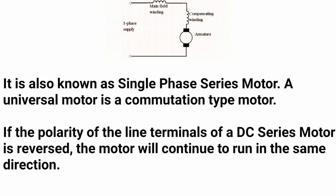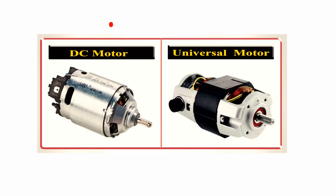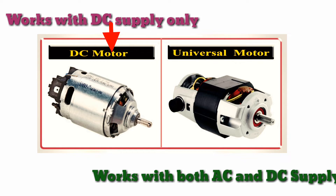A universal motor is a commutation-type motor. The commutating winding is connected in series with the main field winding, as shown in the figure. If the polarity of the line terminals of a DC series motor is reversed, the motor will continue to run in the same direction — hence, reversing polarity on a universal motor does not change direction. The difference between a DC motor and a universal motor is that the DC motor works only with DC supply, whereas the universal motor works with both AC and DC supply.